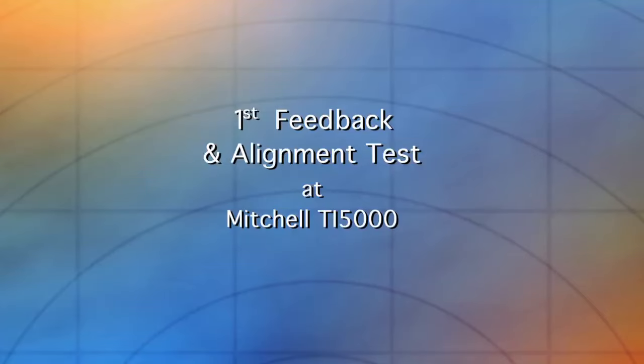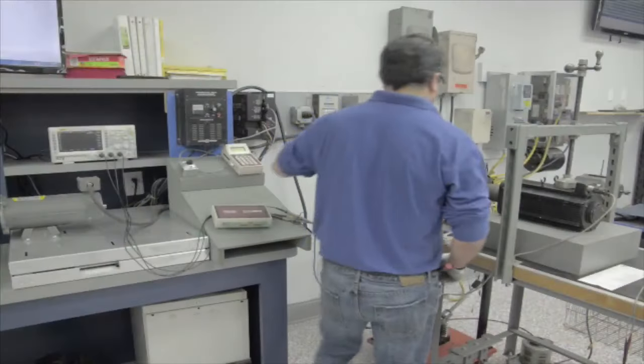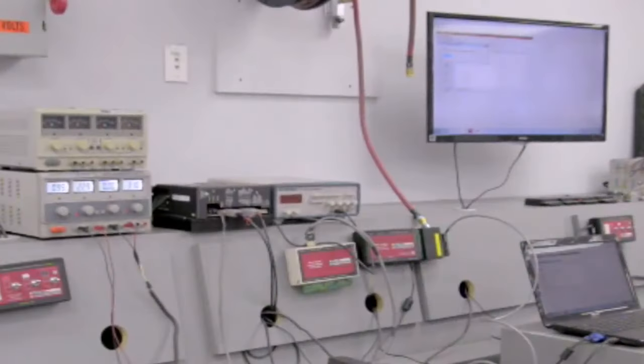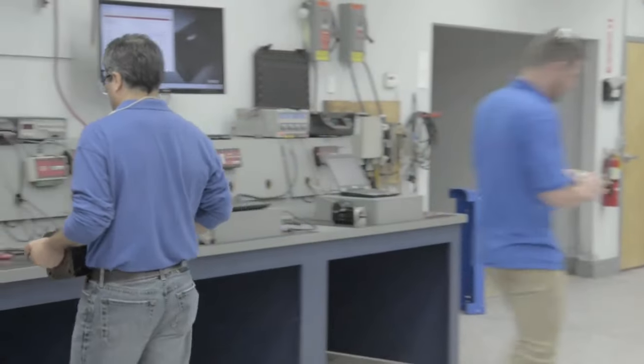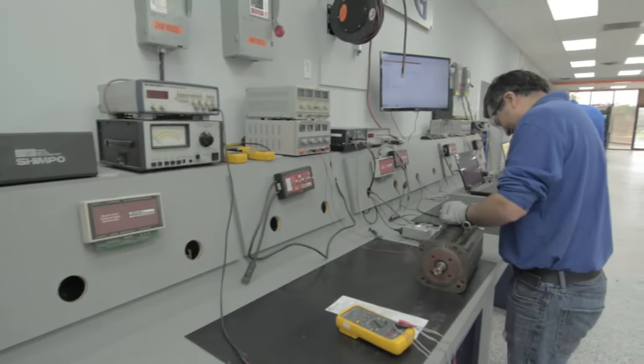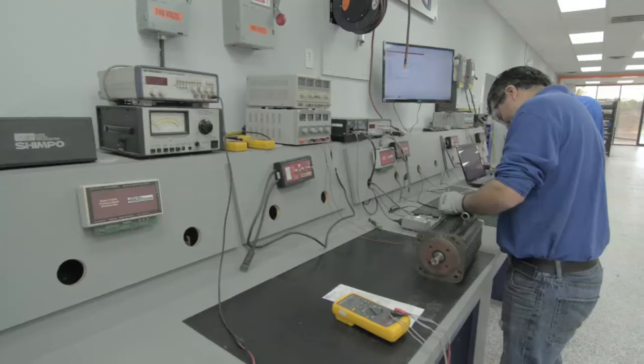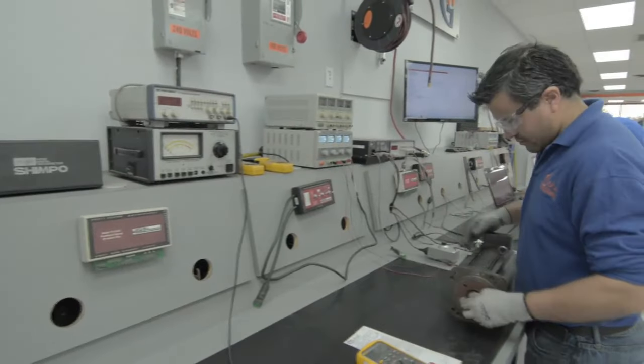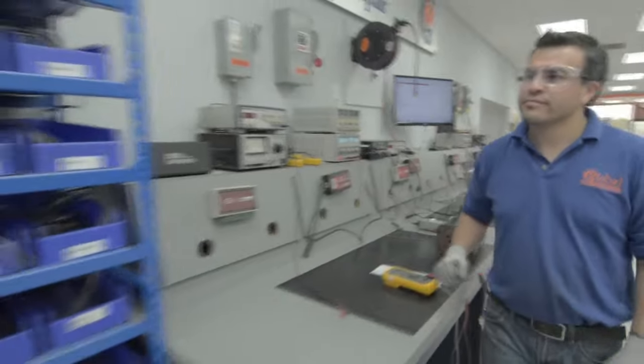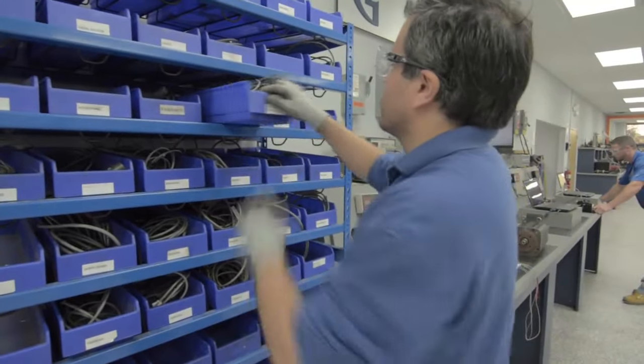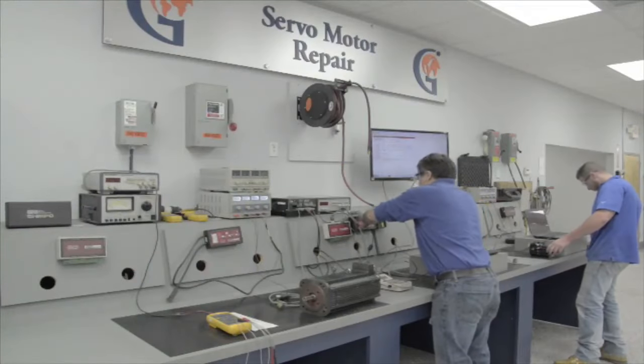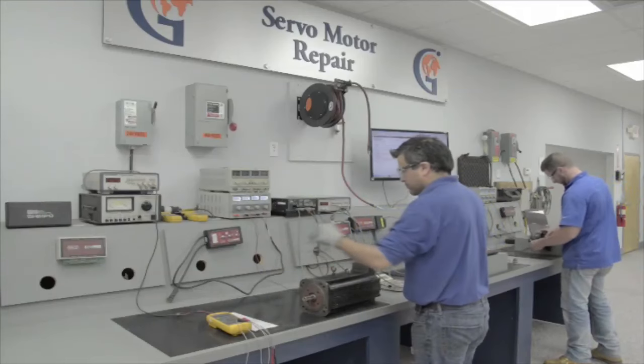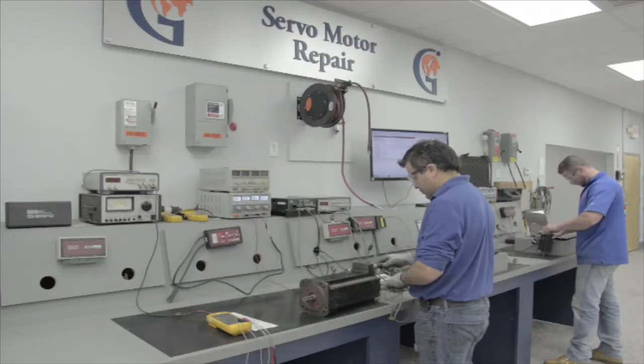Let's head over to our final stage of the servo motor evaluation to the Mitchell Electronics TI5000. The TI5000 is part of our Mitchell Electronics System that allows us to test feedback devices on the servo motor. The most common problem that occurs in a servo motor is within the feedback device. We have hundreds of cables in stock and the software to test almost every type of servo motor, regardless of manufacturer. If we don't stock the cable, we have the ability to make a cable to test your servo motor.